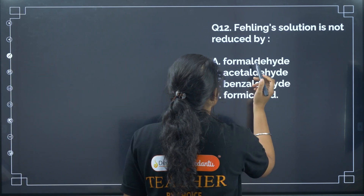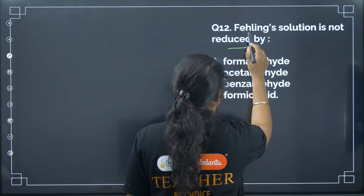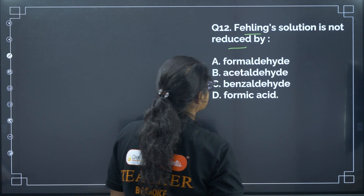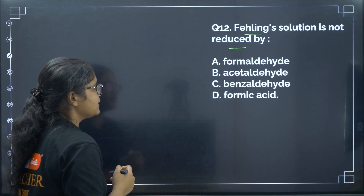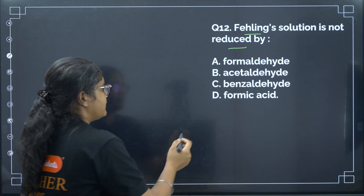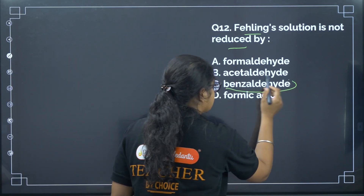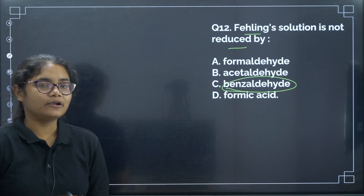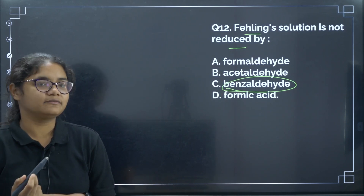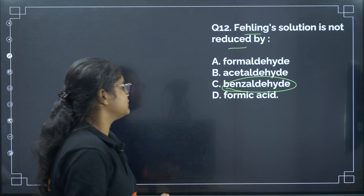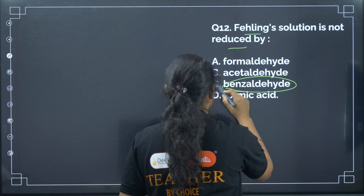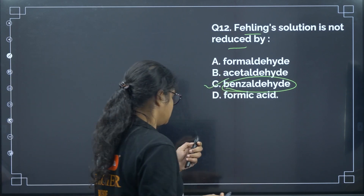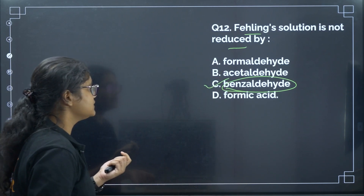Next: Fehling's solution is NOT reduced by which compound? Benzaldehyde is an aromatic aldehyde, and aromatic aldehydes do not give a positive Fehling's test. Correct answer: option C.